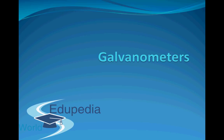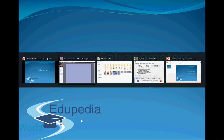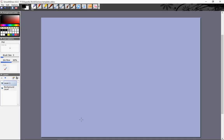Hello everyone and thanks for watching Eddupedia World videos. In this video, we will talk about a device called galvanometer which is used to measure current in a wire or potential difference across a circuit. There are many types of galvanometers. We will study two basic types: the tangent galvanometer and the moving coil galvanometer.